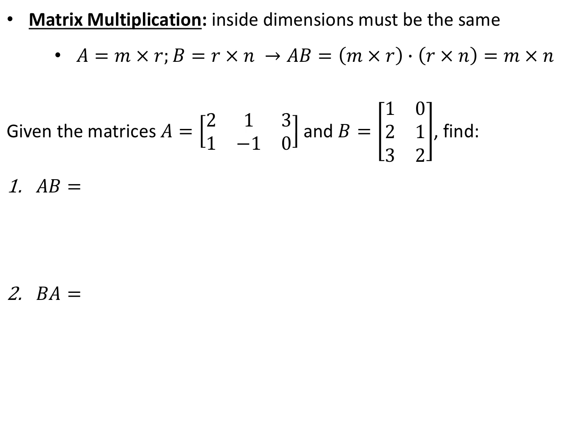For matrix multiplication, the inside dimensions must match when you write them in order. If matrix A is m by r and matrix B is r by n, then A times B requires matching inside dimensions. The number of columns of the first matrix must equal the number of rows of the second matrix. Your resulting matrix will be the size of the outside dimensions — an m by n matrix. Matrix A is 2 by 3 and matrix B is 3 by 2, so their inside dimensions match, and the resulting matrix will be 2 by 2.